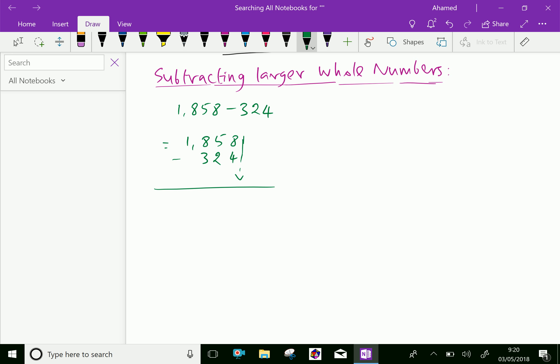8 minus 4 is 4. Then 5 minus 2 is 3, and 8 minus 3 is 5. 1 minus the empty space is 0, so you write 1 as it is. The answer is 1,534.